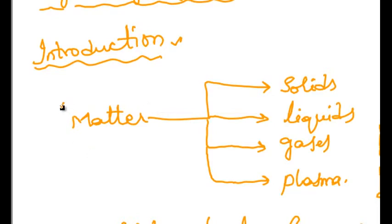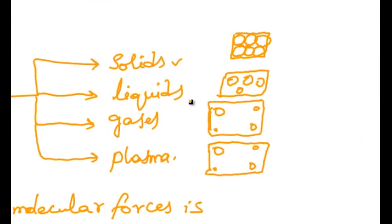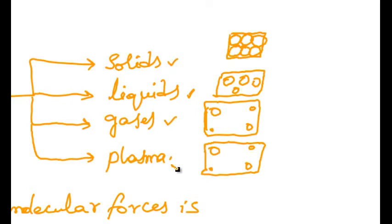The matter in the universe is broadly classified into four major states: solids, liquids, gases, and plasma state. The state of matter in which the atoms are closely packed to each other is known as solid state.